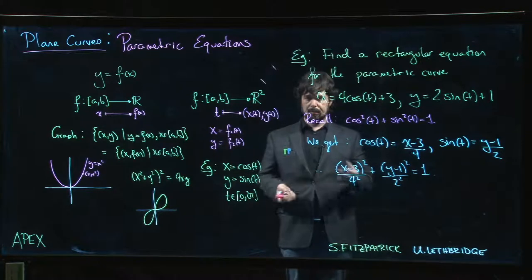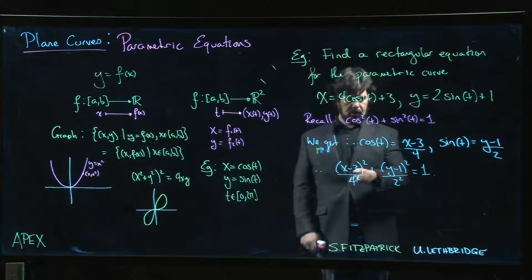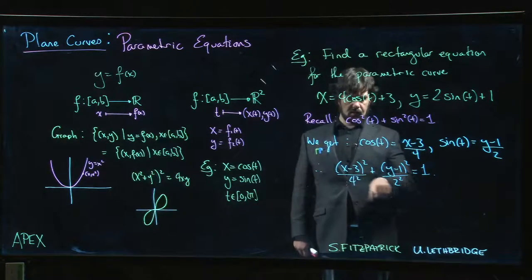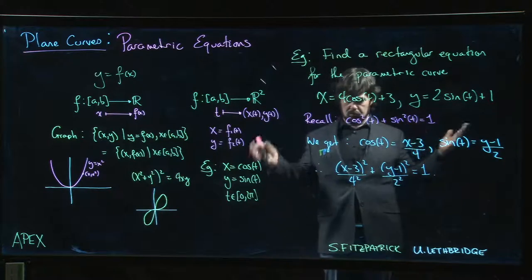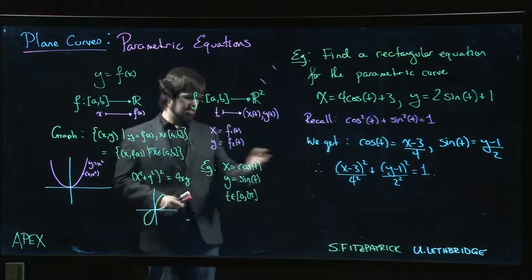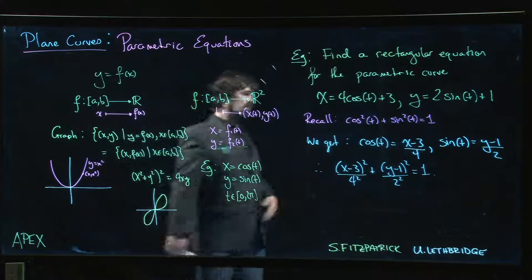We recognize that as the standard equation for an ellipse centered at the point (3, 1) with a semi-major axis of length 4 and a semi-minor axis of length 2. Easy enough. We could plot it if we want, but the point of the problem was not to plot the ellipse, just to come up with the equation.